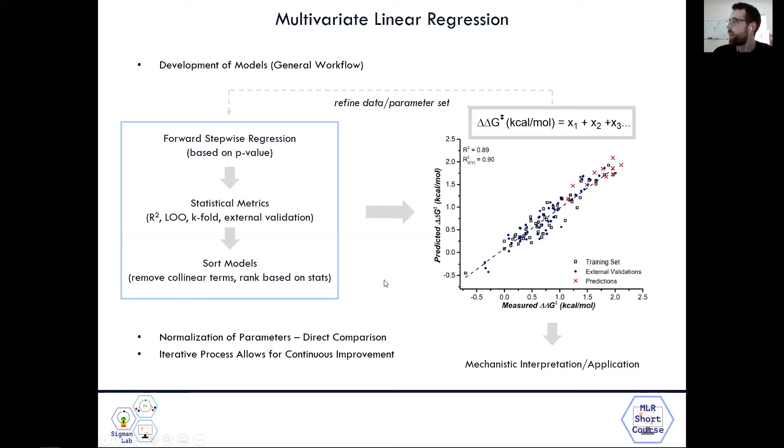And finally, I just have to stress again, this is an iterative process. So we often have to go back, refine data sets, explore more chemical space, and potentially develop new parameters or grab different parameters. And once we have a model we're happy with, we can move on to this mechanistic interpretation and then the different applications we're interested in.